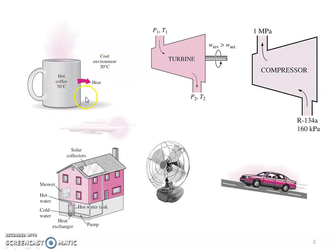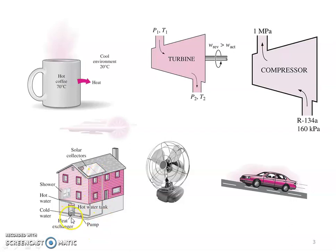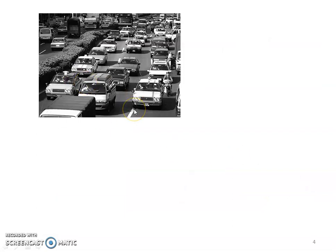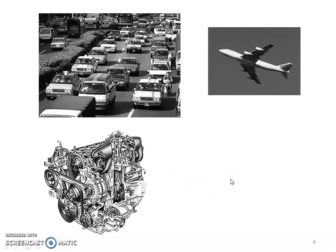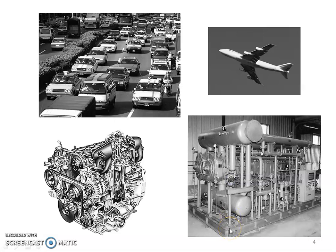Consider a hot cup of coffee, a turbine where gas enters at pressure P1 and leaves at pressure P2 with work generation, a compressor increasing pressure from 160 kilopascal to 1 megapascal. This is a house with a solar panel, heat exchanger, and pump. This is a table fan, a car running on the road, a cluster of cars in traffic, an aeroplane flying, and a multi-cylinder engine of a car.